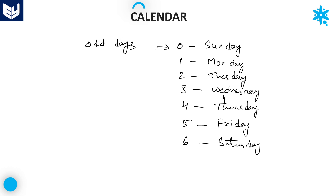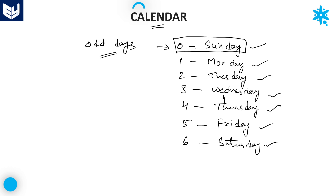Almost 90% of problems in calendars are based on the number of odd days. If odd days are 0, that day is Sunday, followed by Monday, Tuesday, Wednesday, Thursday, Friday, and 6 is Saturday. Always remember the week starts with Sunday, not Monday.